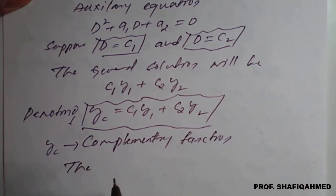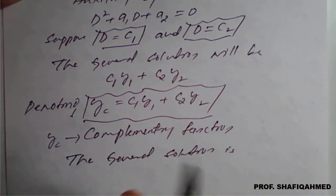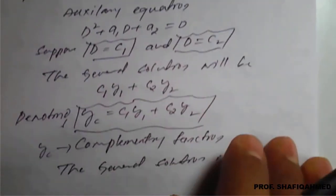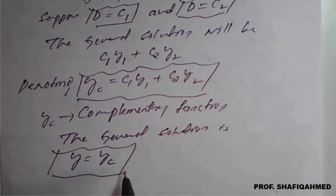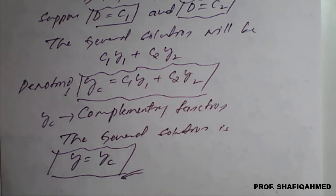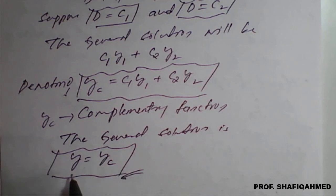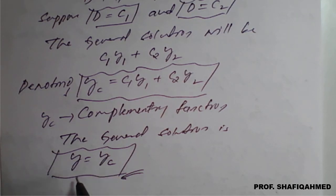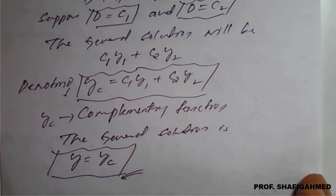Therefore the general solution, since the equation is in terms of y, is given by y equal to yc. These are called the complementary function, and its solution is for the homogeneous equation. Therefore, whatever complementary function result we get is nothing but the general solution: y equal to yc. If they had used x as the variable, we would write x equal to xc. In this way we get the solution of a homogeneous linear differential equation. We will take one example to make the method completely clear.